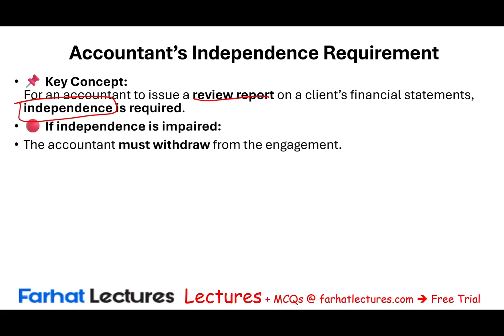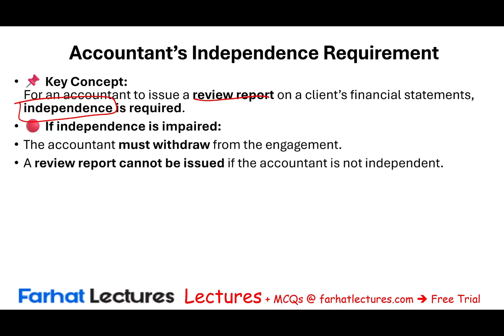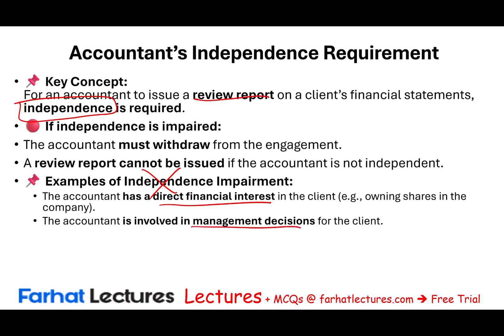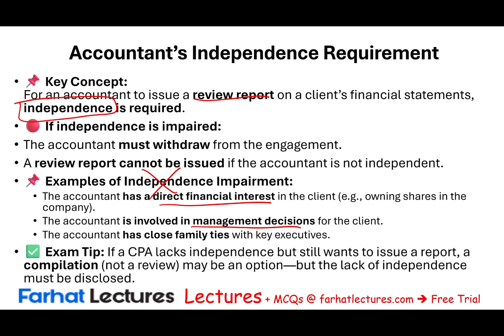If independence is impaired, assuming the accountant is not independent, the accountant must withdraw from the engagement. If a review report cannot be issued due to an independence issue, maybe the accountant can issue a compilation instead. A direct financial interest — such as owning shares in the company — impairs independence, as does involvement in management or close family ties. If the CPA lacks independence and wants to issue a report, they cannot issue a review; they can issue a compilation. They cannot proceed to an audit, because audit requires more stringent independence rules.